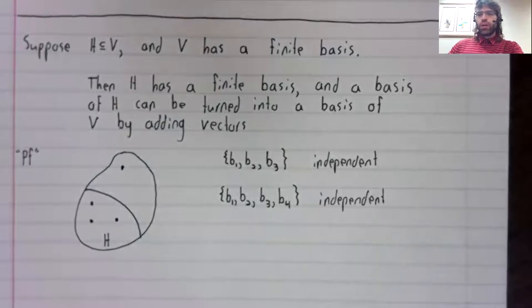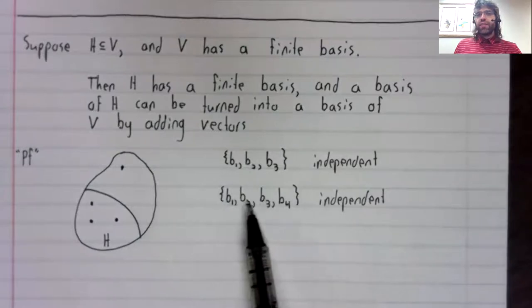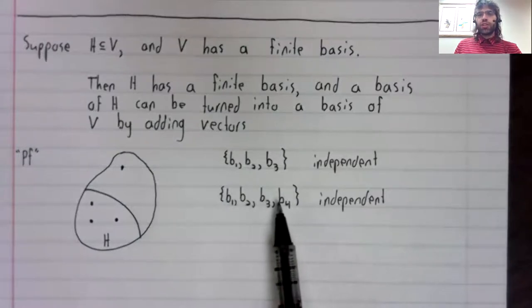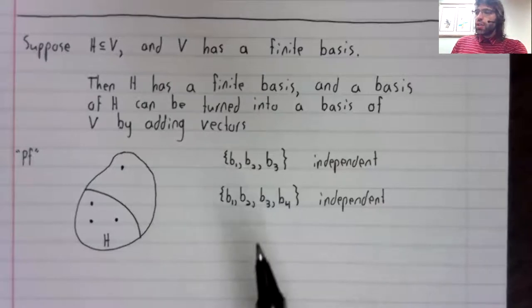And we get a new independent set. Now, one of two things has happened. This might be a basis for V, in which case we're done, or it might not.